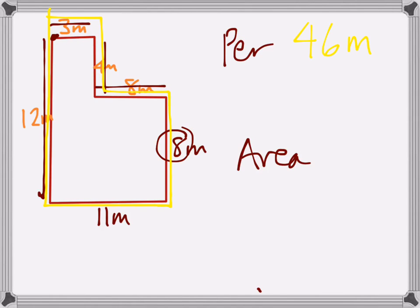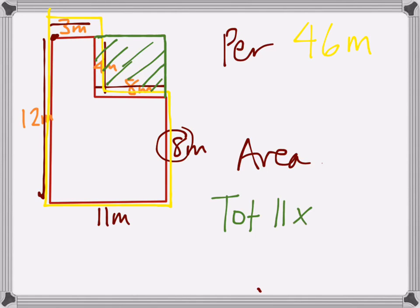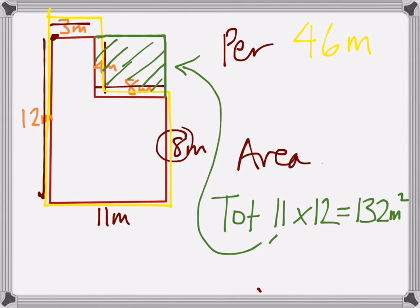Working out the area, let's try the boxing-in method. What we do is make this compound shape into a full rectangle, work out the area of the entire rectangle, and then take away the area of the corner. The total area would be eleven times twelve, which gives us one hundred and thirty-two metres squared. The area of the corner is four times eight, which is thirty-two metres squared. Take that away to give you one hundred metres squared altogether.